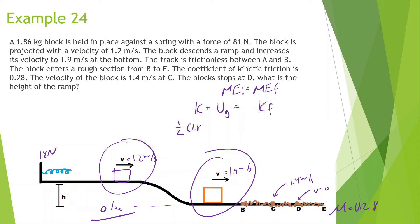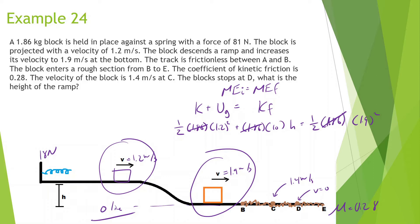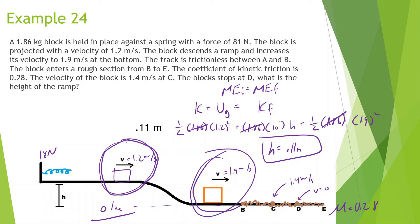We have ½(1.86)(1.2²) + (1.86)(10)(h) = ½(1.86)(1.9²). Since 1.86 appears in every term, we cancel it out. Solving: (1.9² × 0.5) − (1.2² × 0.5), divided by 10, gives us a height of approximately 0.11 meters. Remember, many times in physics you're just looking at two points to get the answer.